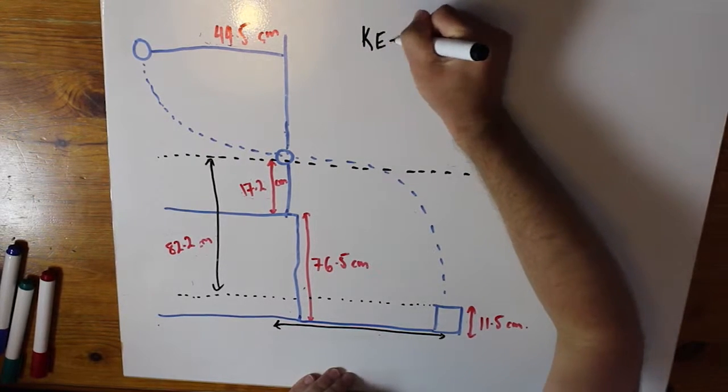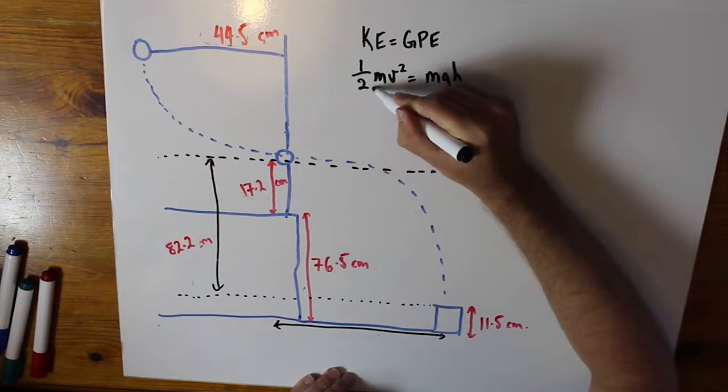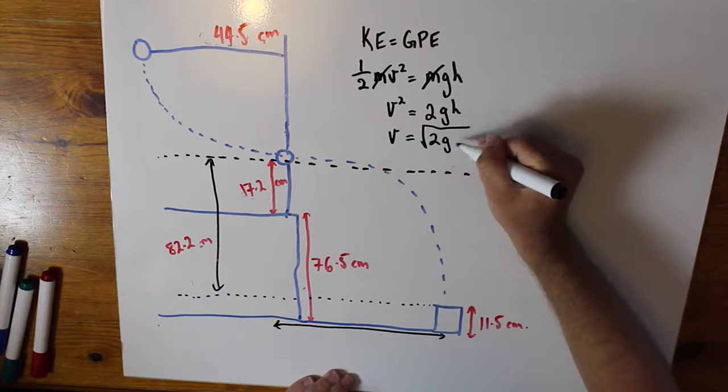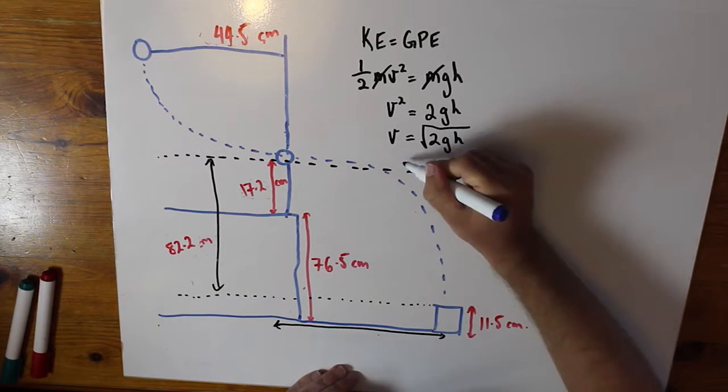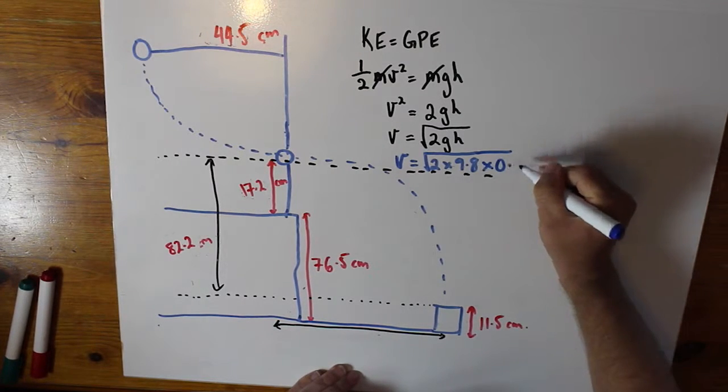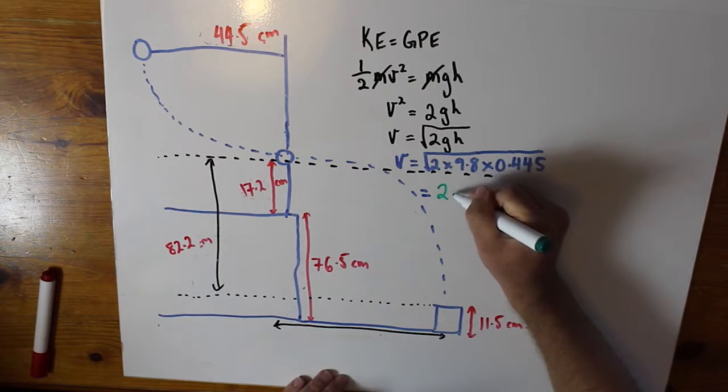We can find the kinetic energy of the sinker the moment before the thread is cut by equating the difference in gravitational potential energy it has the moment before you let the sinker go. You can then use the kinetic energy to calculate the initial speed of the projectile.